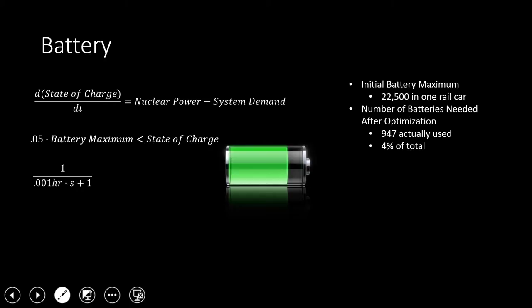And after running the optimizer, we found out that really only 4% of the total volume of a rail car was required for an array of batteries to produce the energy required.